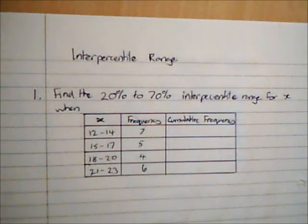In this video we are going to look at how to find the interpercentile range. If you already know how to work out the interquartile range, then you've pretty much done this already because the interquartile range is just specific to the 25% to 75% interpercentile range.